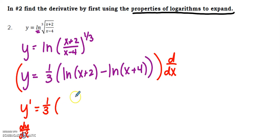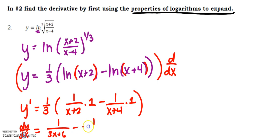This becomes y prime equals one-third is a constant multiple. Derivative of the natural log of a function is 1 over that function times the derivative of that argument, minus 1 over x+4 times 1. To clean this up, dy/dx equals 1/(3x+6) minus 1/(3x+12).